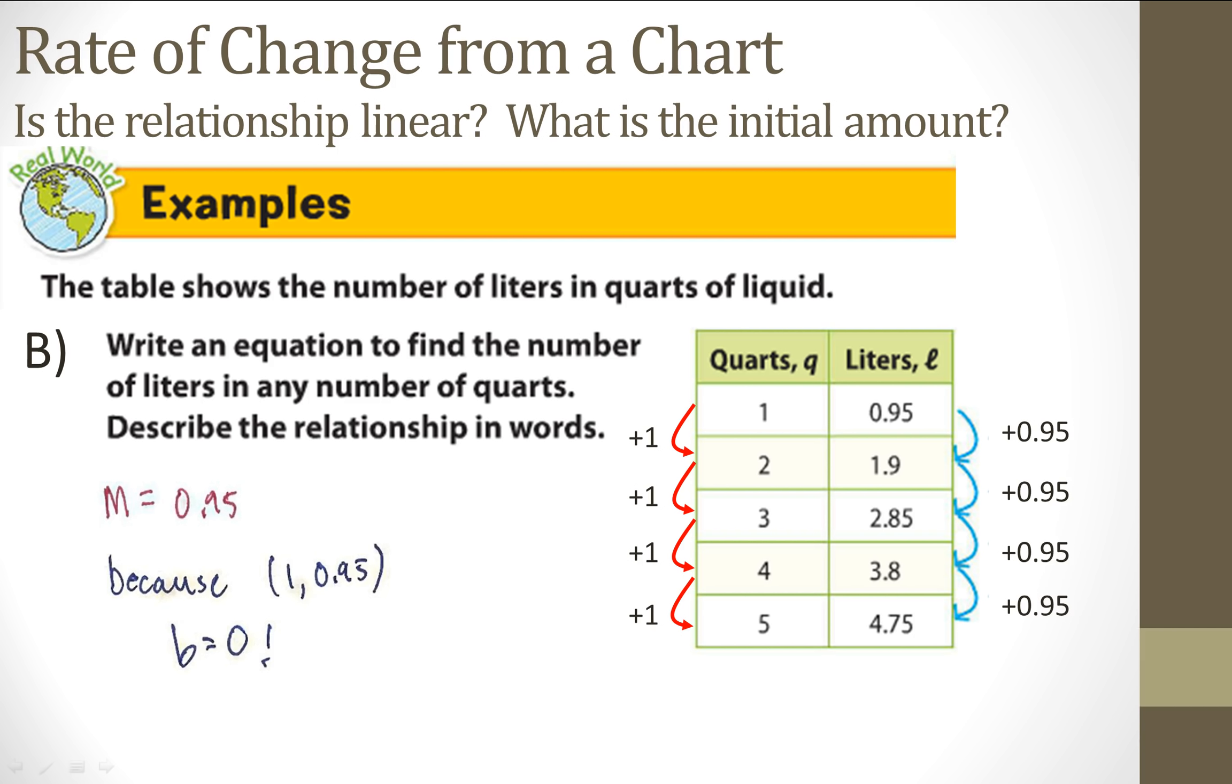That is my initial amount, is zero. If I have no quarts, I have no liters. That makes sense. My equation is Y equals 0.95X. But it wants us to describe the relationship with quarts and liters. So that means the liters is equal to 0.95 quarts. Excellent. So for every quart, I have 0.95 liters. That would be in words.